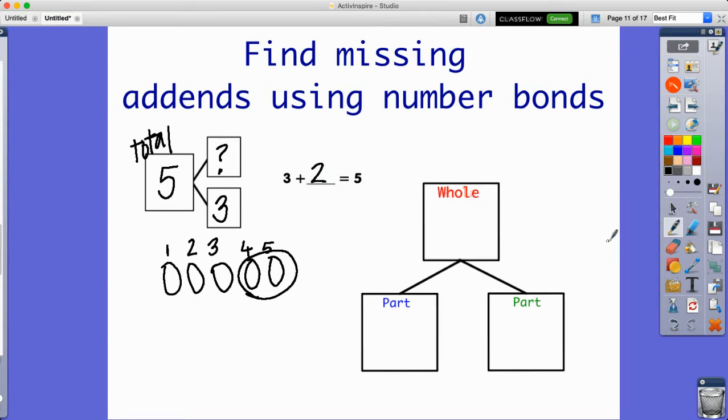So 3 plus 2 is 5. I'm going to erase my question mark here and put a 2. So this was my missing addend. 3 plus 2 is 5, and also 2 plus 3 is 5. Either way, when I join these two numbers together, I'm going to get 5.